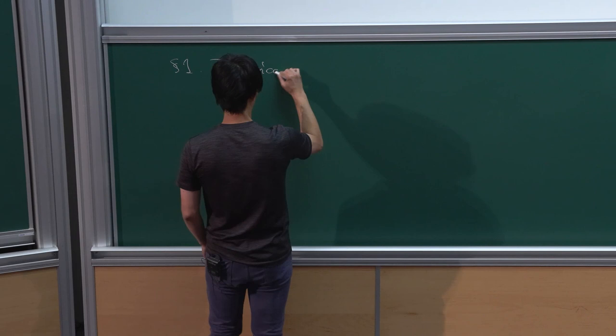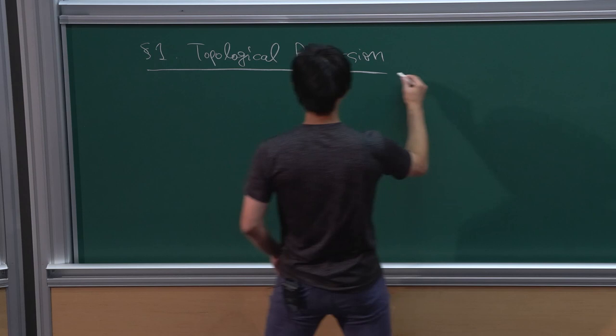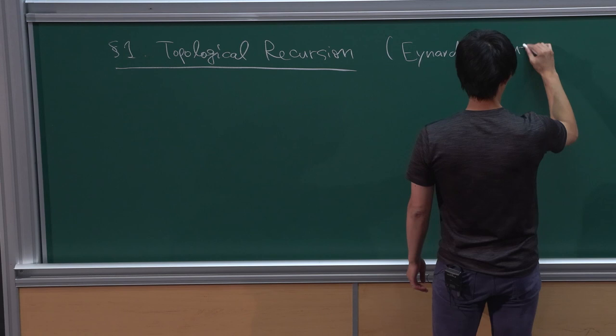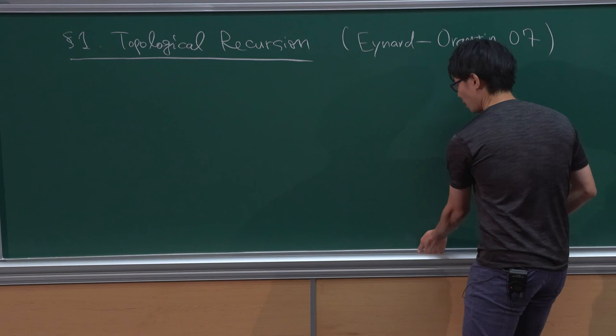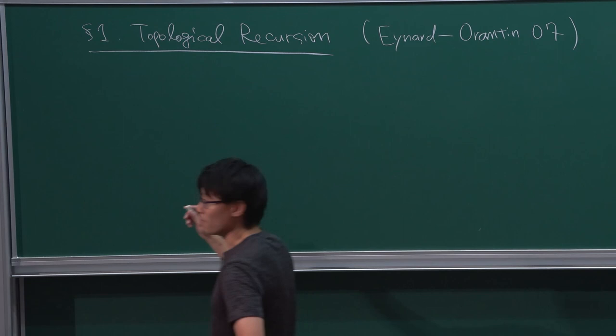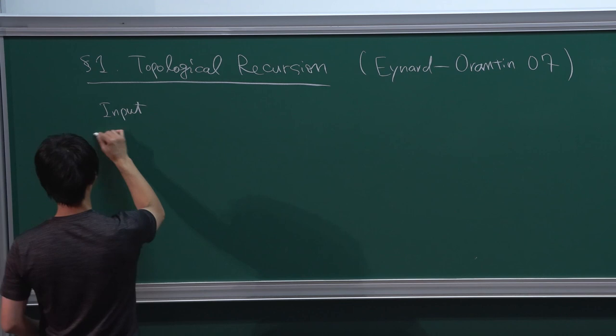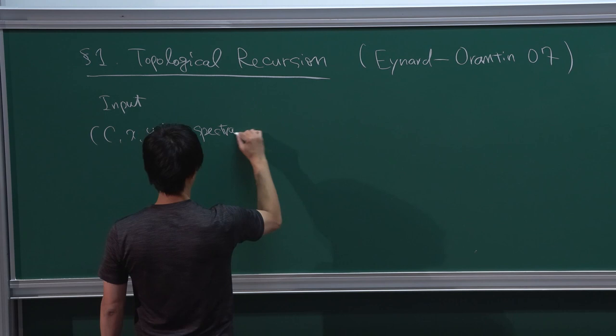Topological recursion was introduced by Eynard and Orantin. It is a recursive algorithm which gives you some analog of correlators and free energies in matrix models. Basically it has some input and output. The input is a so-called spectral curve, which is a triplet C, X, and Y.